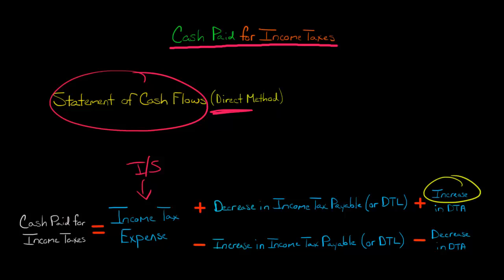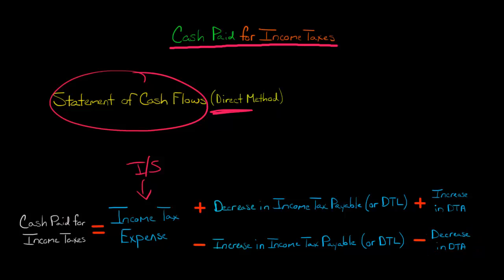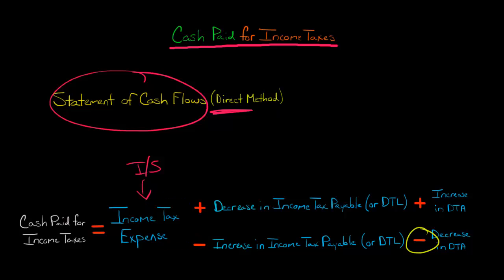If there's an increase in deferred tax assets for the company, then we are going to add that to income tax expense. Conversely, if there is a decrease in deferred tax assets, then we're going to subtract that from income tax expense when getting cash paid for income taxes. If you've never heard of a deferred tax liability or deferred tax asset before, I have videos on those, so I encourage you to check them out.